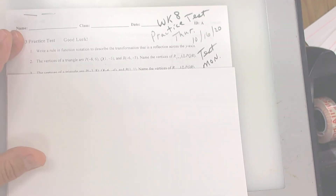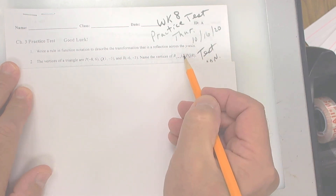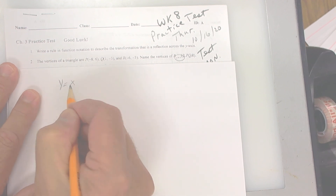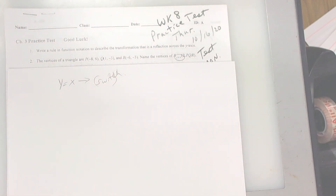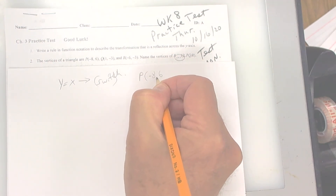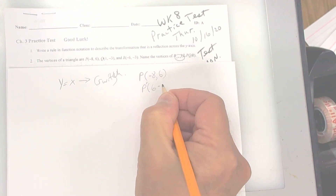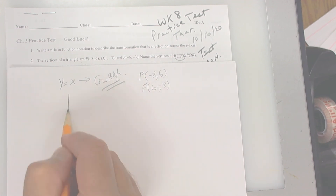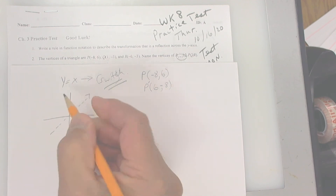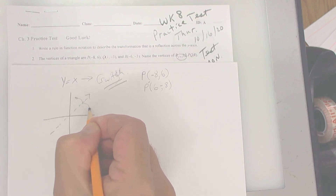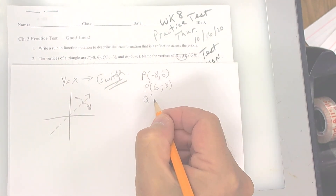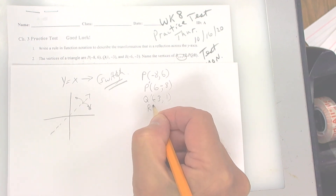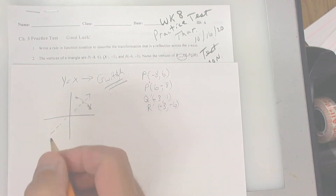Number two: the vertices of a triangle are given and you want to reflect it over the line y equals x. So y equals x — what you're going to do is switch the coordinates. The first one, P, is negative 8 and 6, so P prime is going to be 6 and negative 8 — switch. The line y equals x looks like a 45-degree angle. In order to reflect from here over to here, you switch the x and the y. So Q prime would be negative 3 and 1, and R prime would be negative 3 and negative 6. All you do is switch to go over the 45-degree angle.